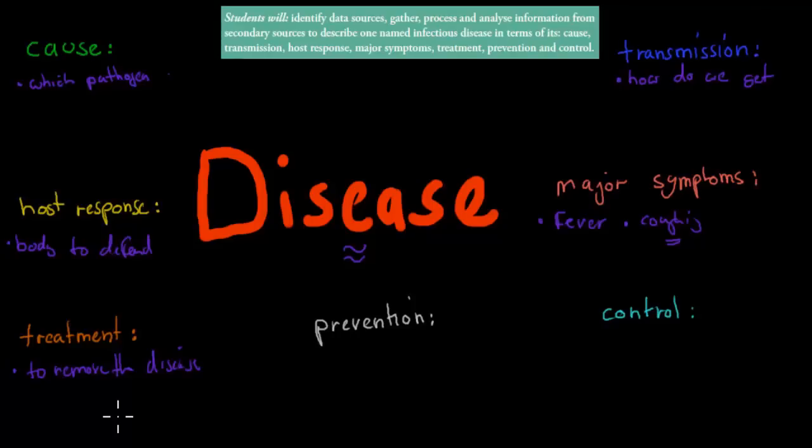So prevention is how do we make sure we don't have disease in the first place? So we don't want disease. So how do we make sure people just don't get the disease in the first place? That's prevention. What mechanisms do we have in place for that?